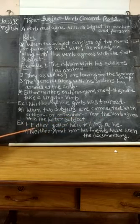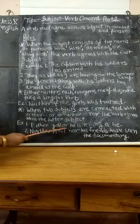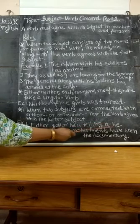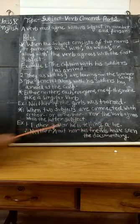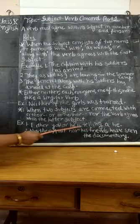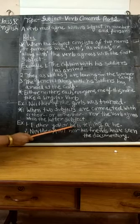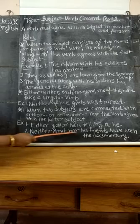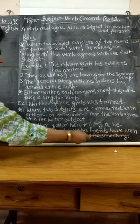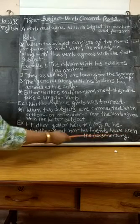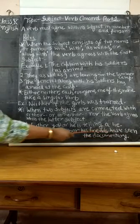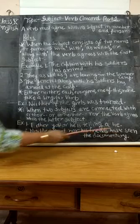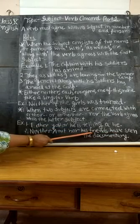Example: 'Either you or he is telling a lie.' Either you or he — is. Next example: 'Neither Amit nor his friends have seen the documentary.' We are using the verb here according to 'friends.'